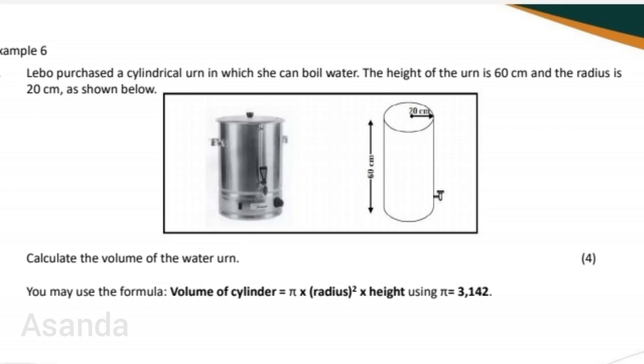Let's try another example. Labo purchased a cylindrical urn in which she can boil water. The height of the urn is 60 centimeters and the radius is 20 centimeters as shown below. Calculate the volume of the water urn.